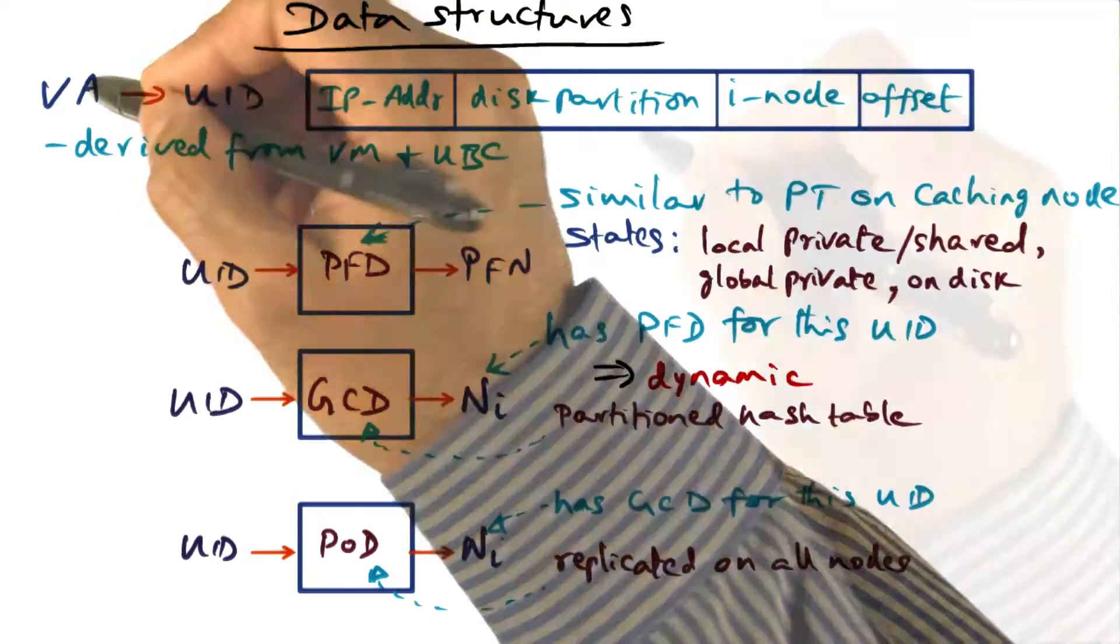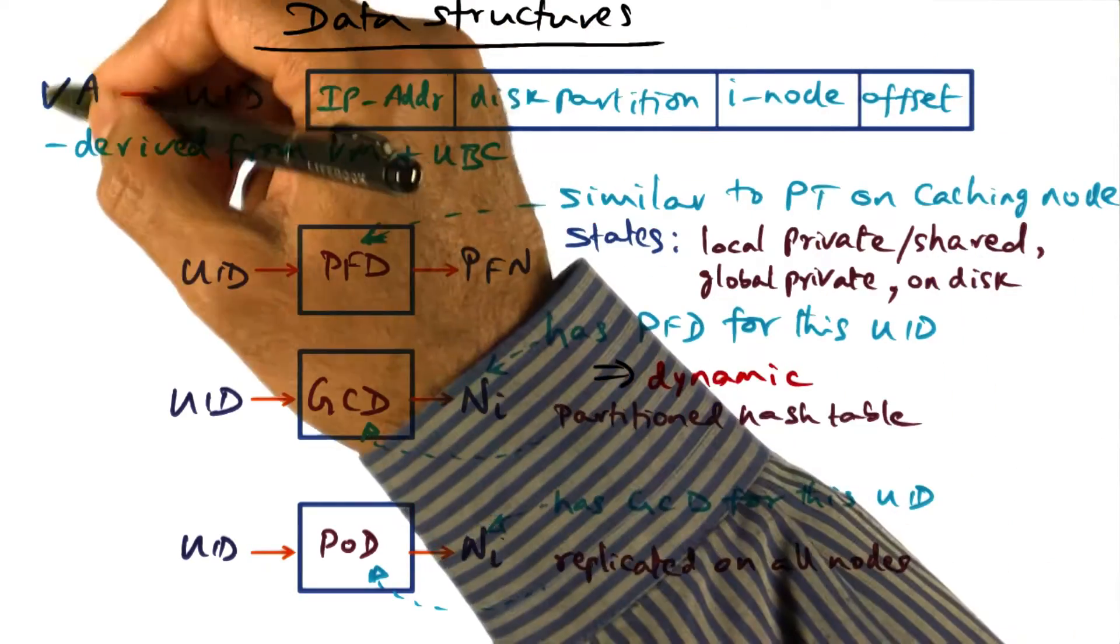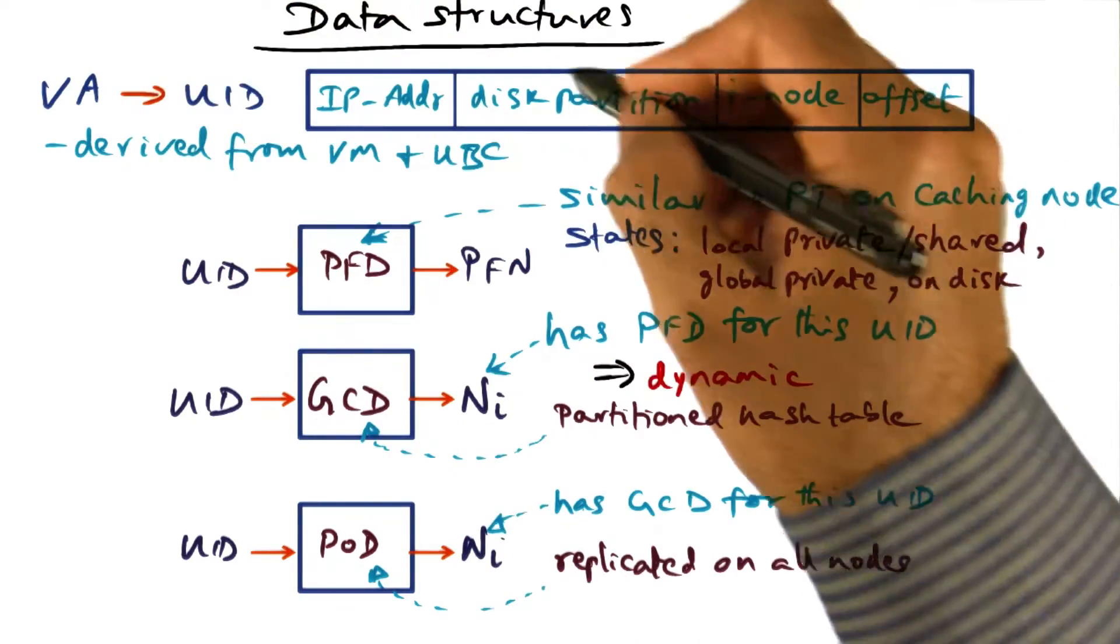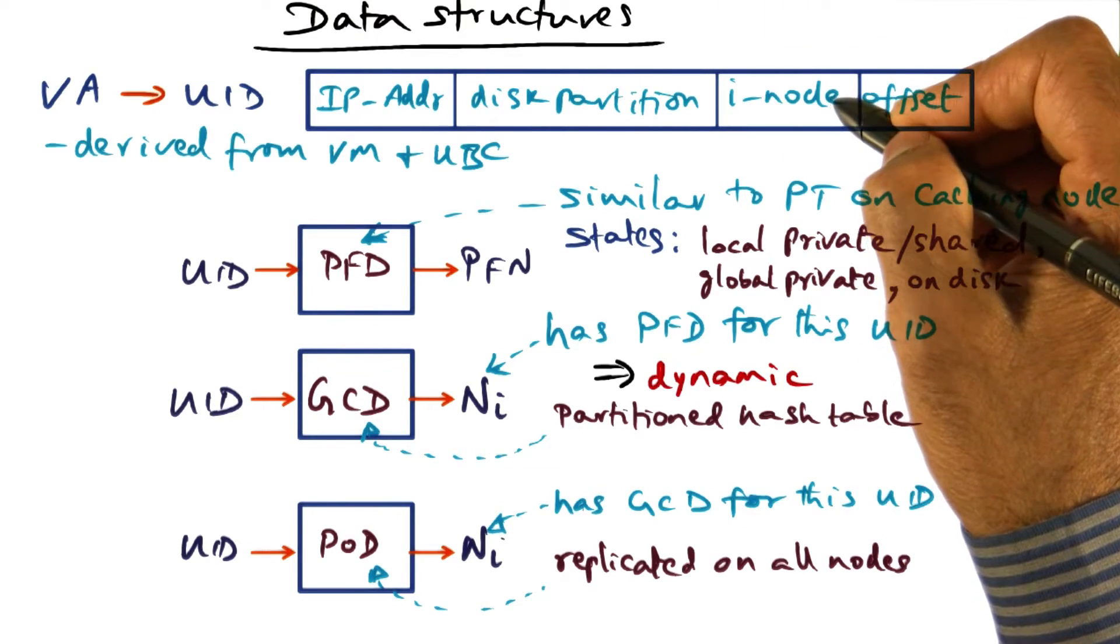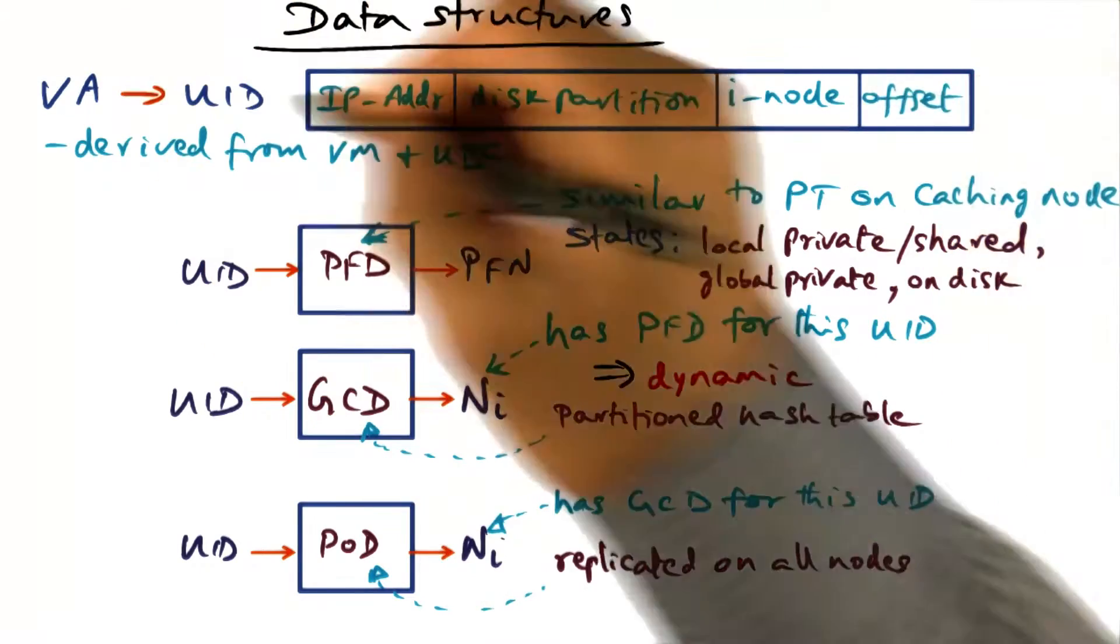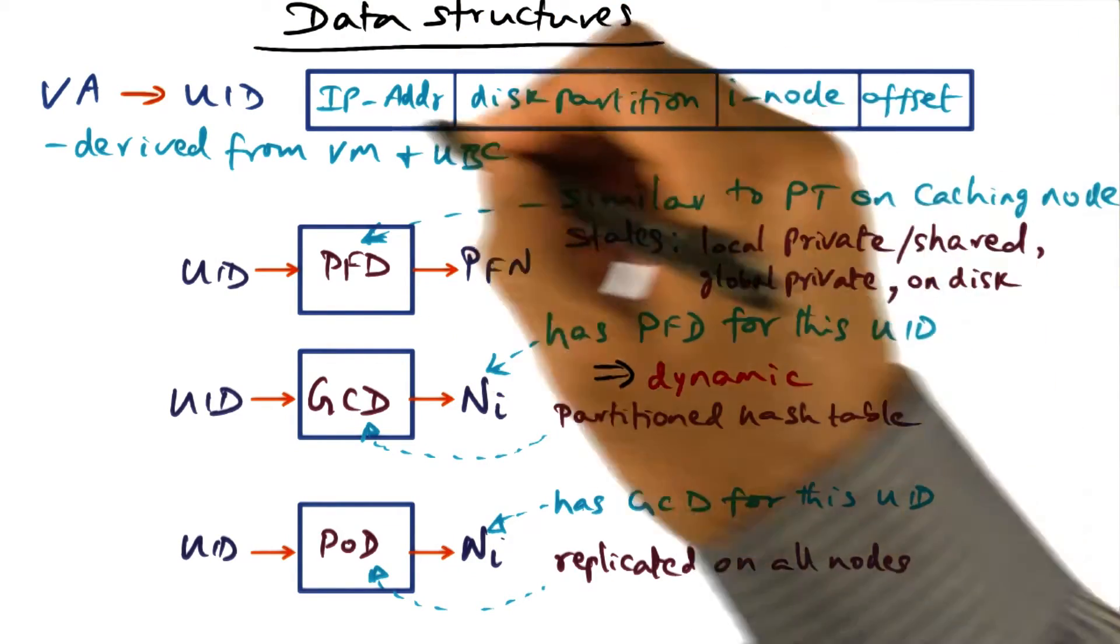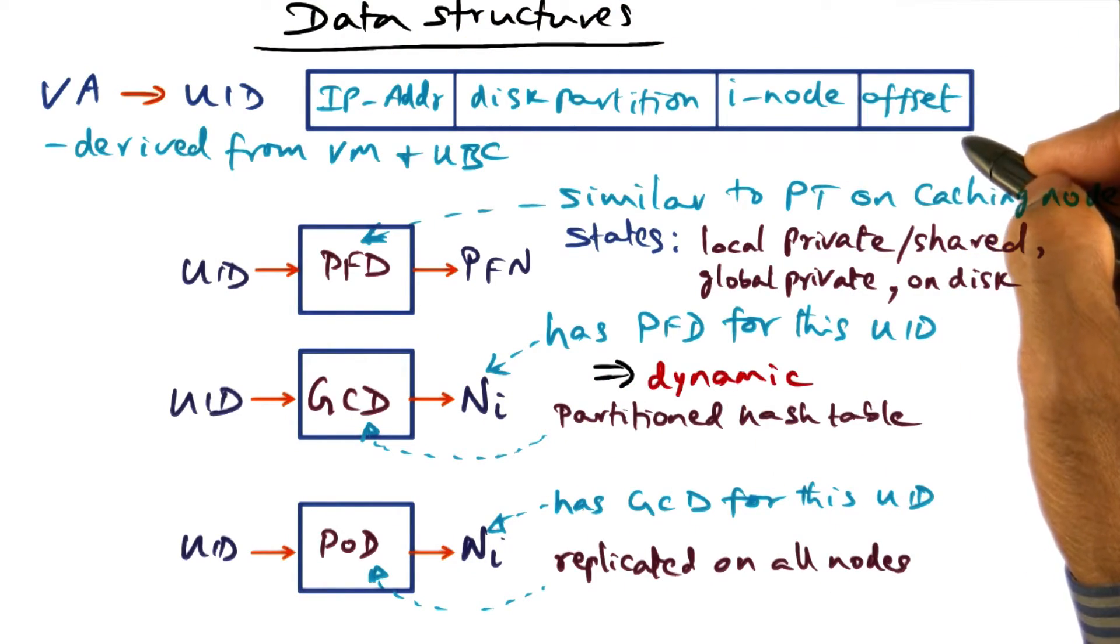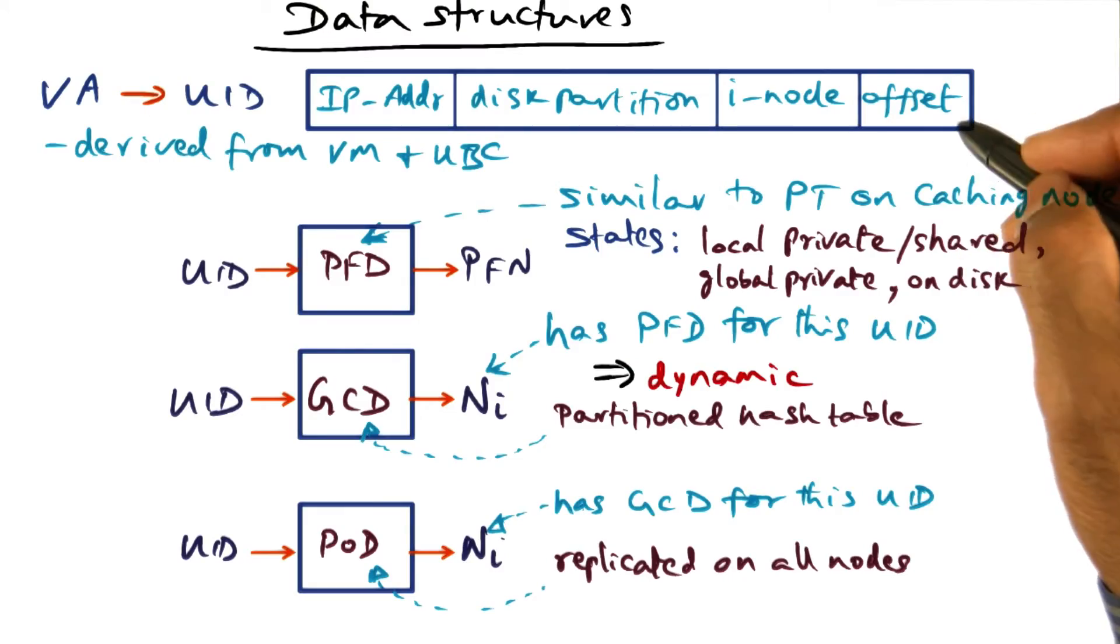We know which disk partition contains a copy of the page that corresponds to this virtual address, that we know. What is the inode data structure that corresponds to this page? And what is the offset? So if you put all of these entities together, you get a universal ID that uniquely identifies a virtual address. This is the offset within a page.